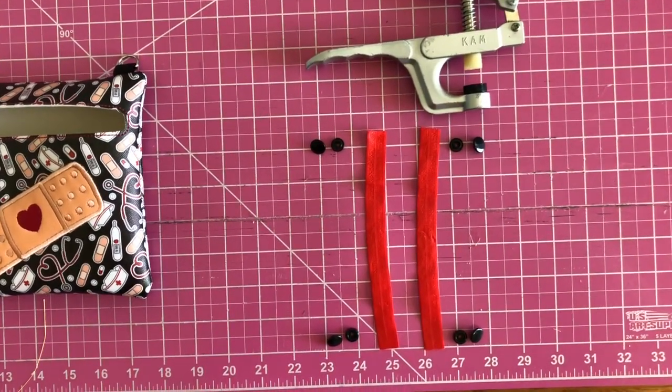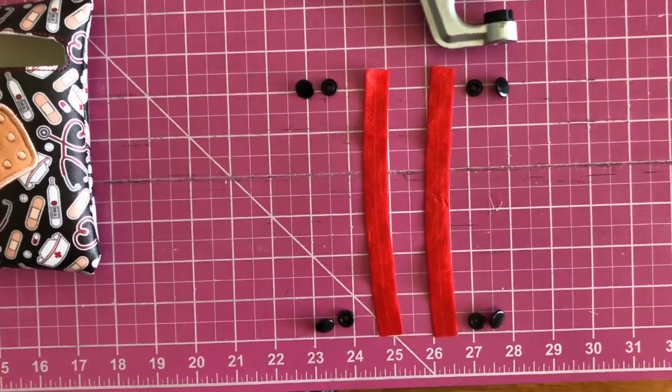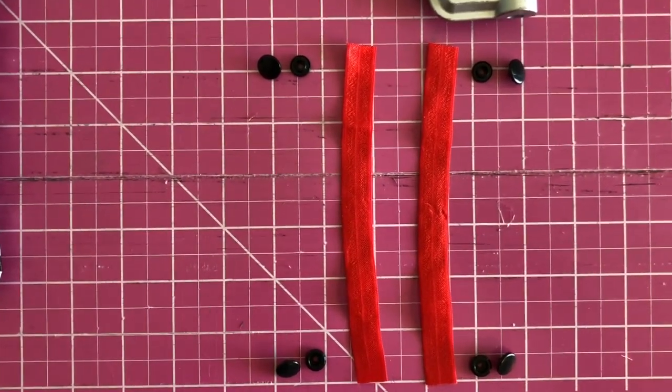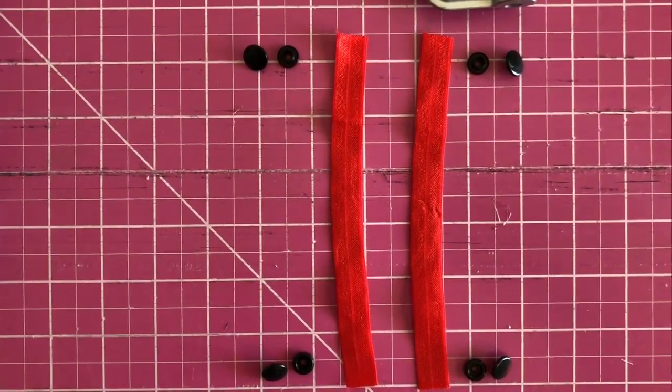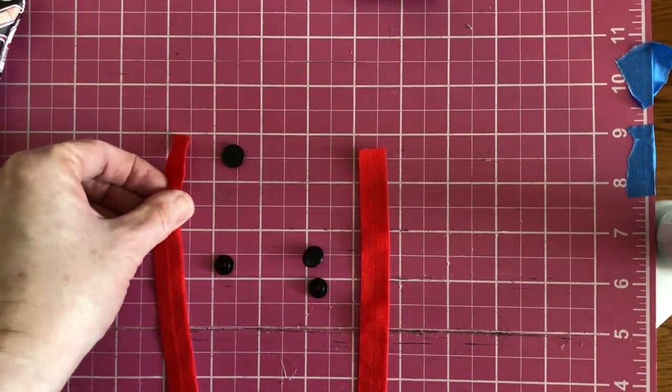You will need two straps each cut to the desired length plus about one and a quarter inches. You will need two complete snap sets and a snap setter. I used fold over elastic.